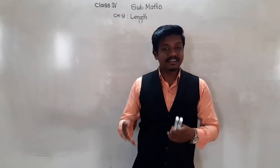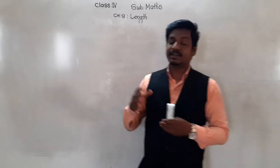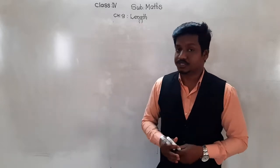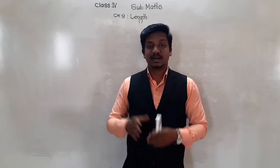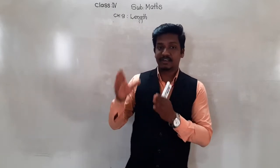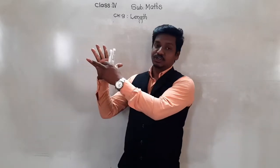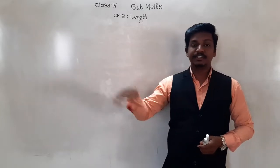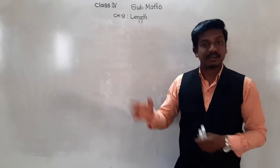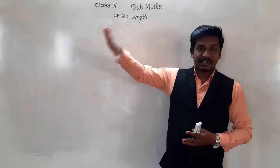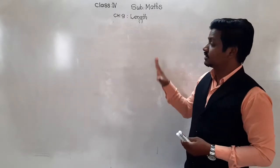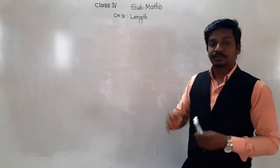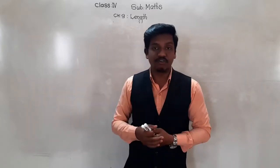Nowadays we have standard units to measure length. Our ancient people used body parts, but this is no longer used. Why? Because body parts are different for different people. My hand span is this much long, but your hand span may be smaller. If I measure this blackboard using my hand span and you measure it using yours, the result will not be the same — so it was not a reliable way of measuring length.